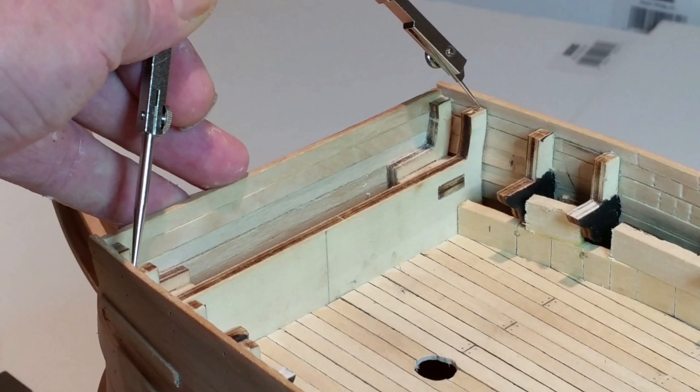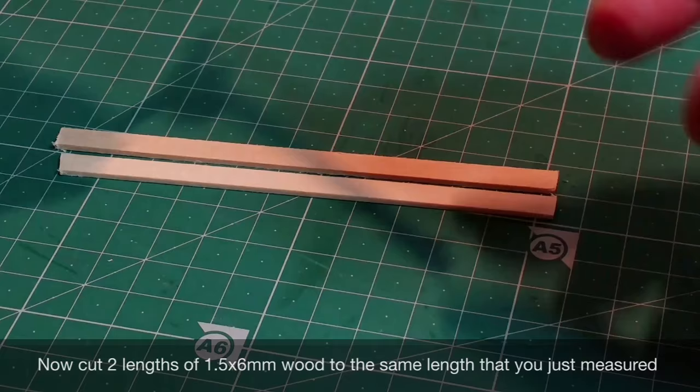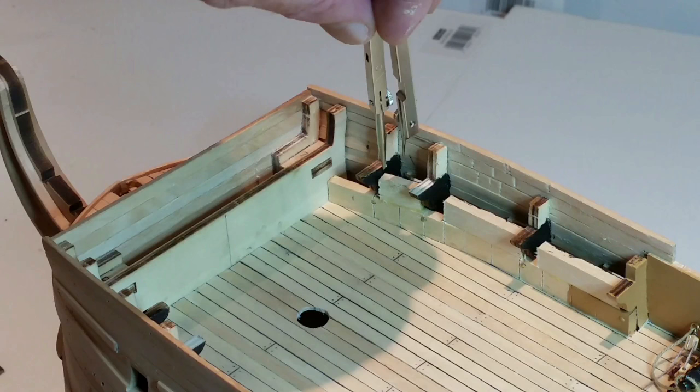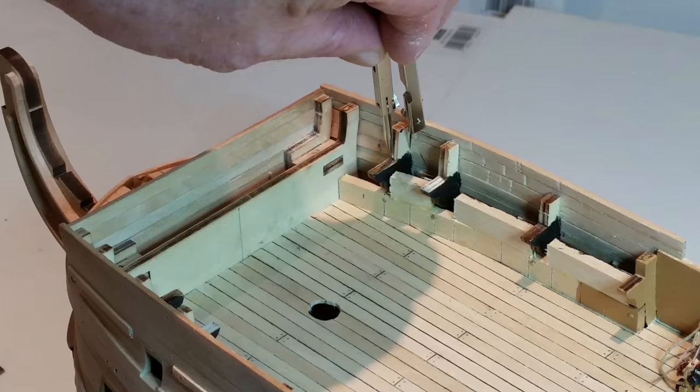Measure across the full width of frame 12 between the inner faces of the hull plank. You can use dividers or a steel rule for this. Now measure the width of the upward projecting sections of the frame.